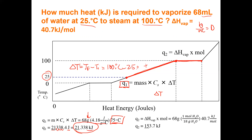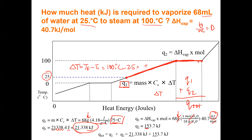Next, for the vaporization portion: 68 grams converted to moles, then multiplied by 40.7 kJ/mol gives 153.7 kilojoules — with two sig figs, that's 150 kilojoules. Adding Q1 plus Q2: 150 plus 21.38 gives 171.38, and rounding to two sig figs gives 180 kilojoules total.